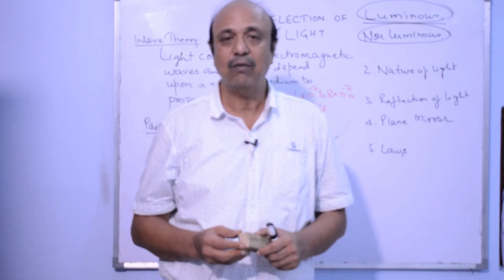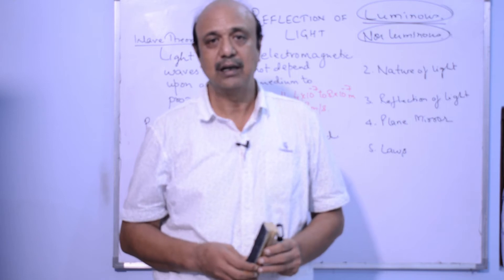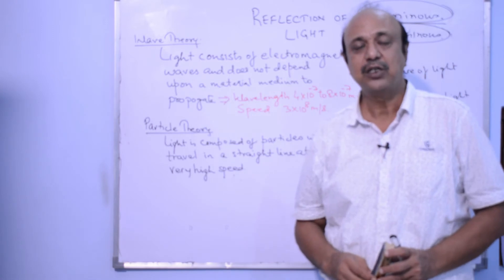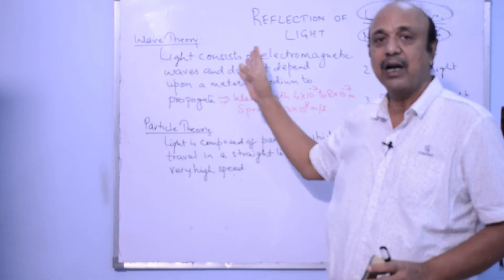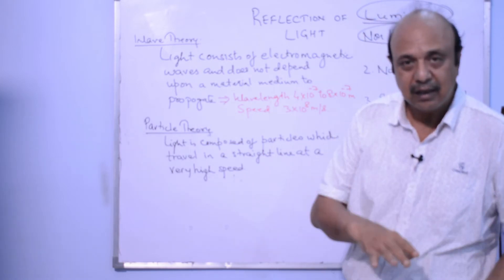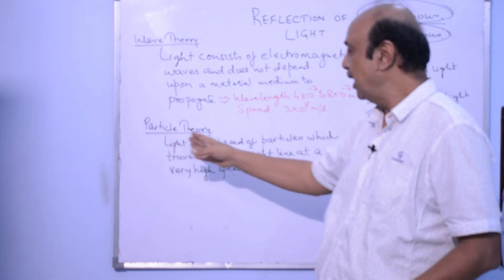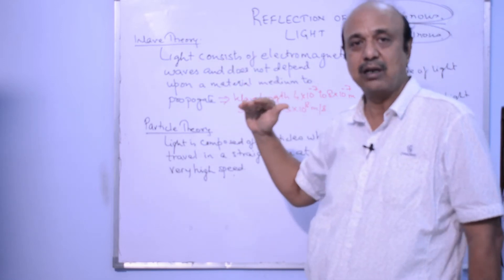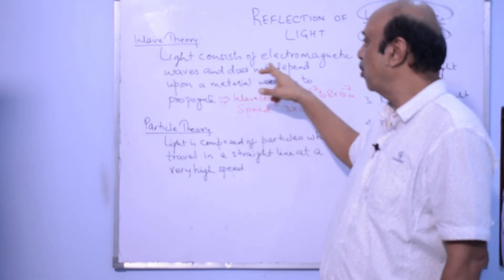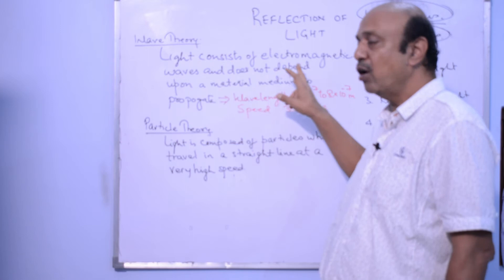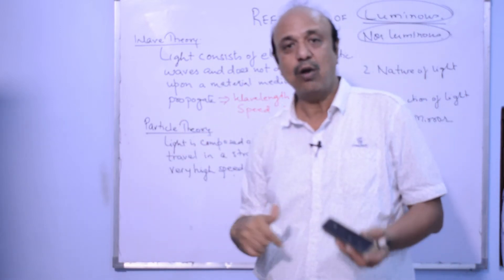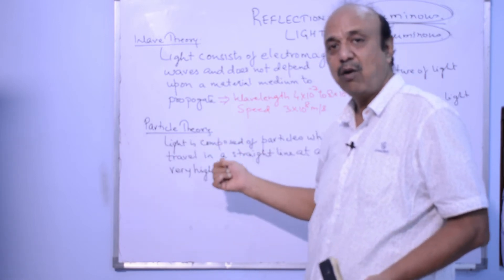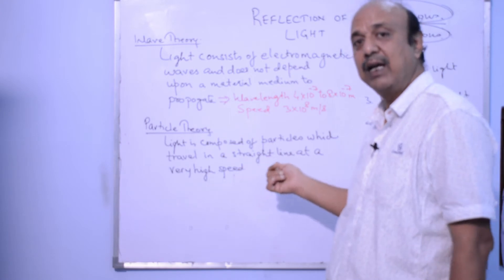When we talk about the nature of light, there are two theories associated with it. One is the wave theory, which says that light consists of electromagnetic waves. The other is the particle theory, which says light is composed of particles. These two are contradictory. The wave theory states that light does not depend on any medium — solid, liquid, or gas — to propagate.